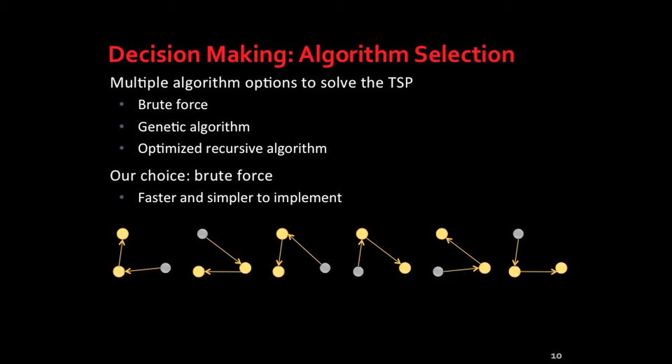In the development process, we researched and considered three different algorithms to solve the traveling salesman problem. The first is brute force, which takes all possible combinations of paths between cities, finds their distances, and looks for the shortest. That's the least efficient because you have to consider every combination. The next is the genetic algorithm, which uses random sets and combines them to create more efficient solutions. The last is the recursive algorithm, which repeats itself until it finds the most efficient solution. In the end, we went with brute force because it's the fastest and easiest to implement, and since we're not solving a problem with many cities, it's not much slower than the other methods.